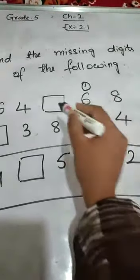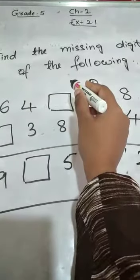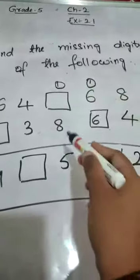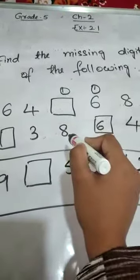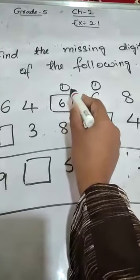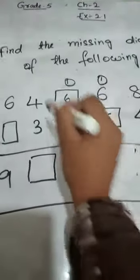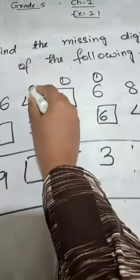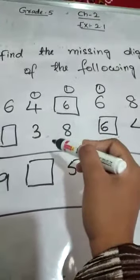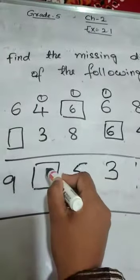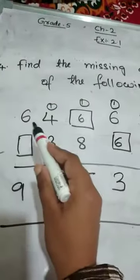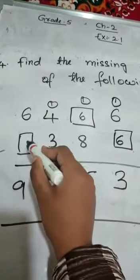Again we have to take here. We should get the 13. So 6 plus 6 here, 6 plus 6 is 12, plus 1 is 13. So 3, 1 carry will be here. 1 carry will be here. So here 15 we should get. So 8 plus 6 plus 7, 7 plus 8, so here 15, 5, 1 carry here. So 4 plus 1 is 5, 5 plus 3 is 8. So here 8 will come.